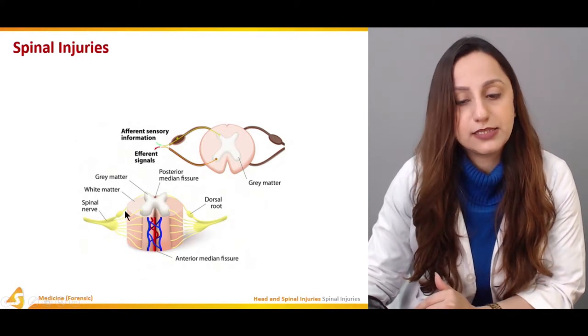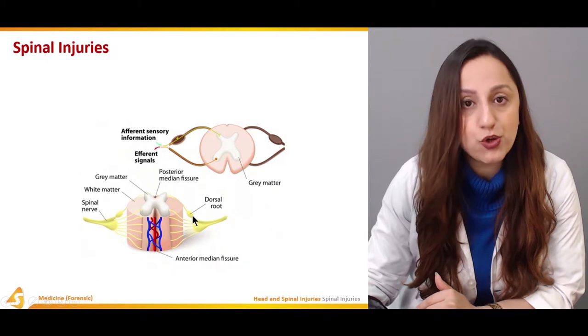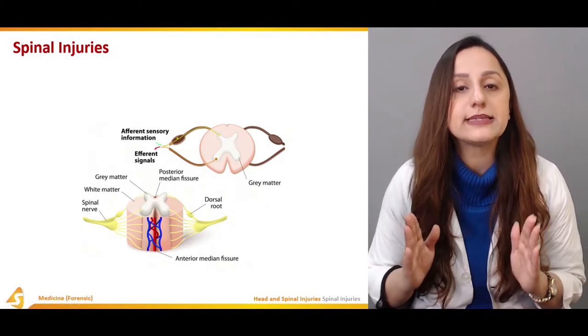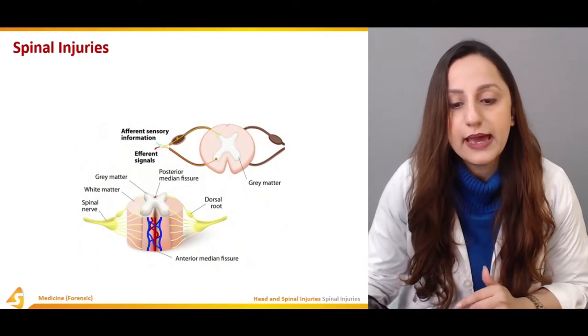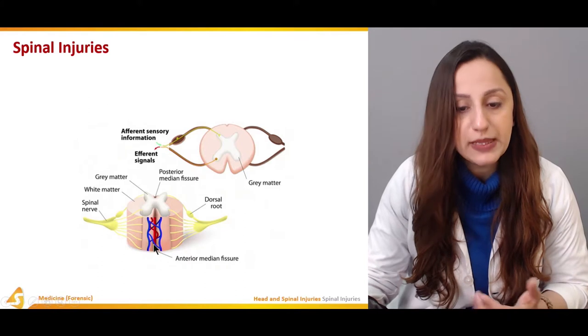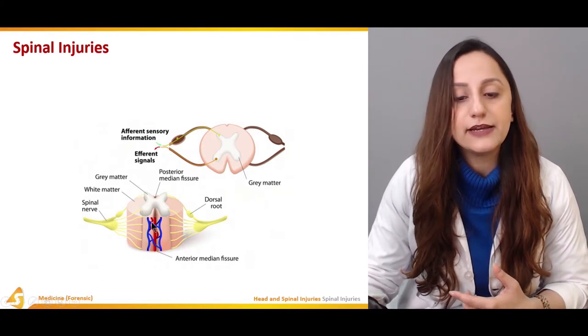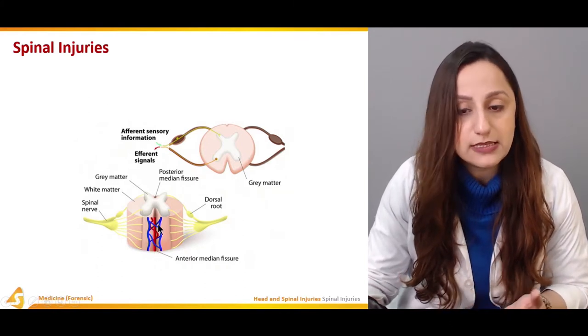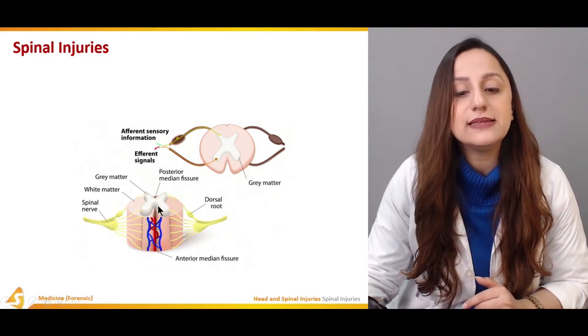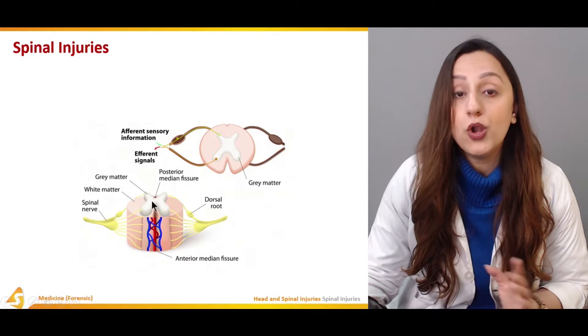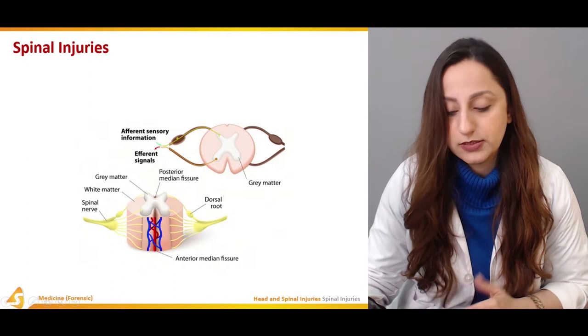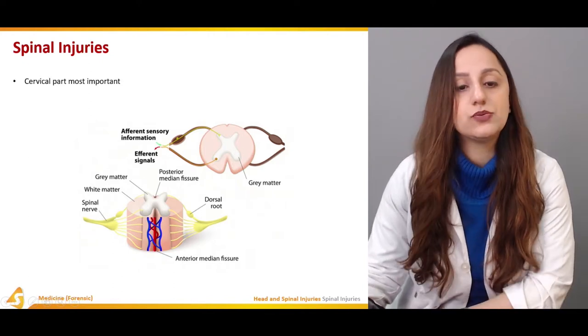Then we have the dorsal root column which is basically lying on the lateral surfaces of the spinal cord, and then over here we have the anterior median fissure which is carrying all these arteries and veins. Basically, these nerves, arteries, veins, and gray and white matter - all of them are at stake whenever there is trauma to the spine. This is basically the mainstay to that.